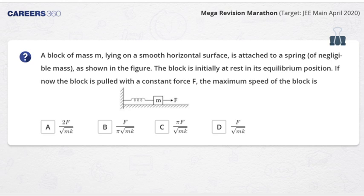Next question: A block of mass m lying on a smooth horizontal surface is attached to a spring as shown in the figure. The block is initially at rest in its equilibrium position. If now the block is pulled with a constant force F, the maximum speed of the block is: (a) 2F/√(mk), (b) F/π·√(mk), (c) πF/√(mk), (d) F/√(mk).